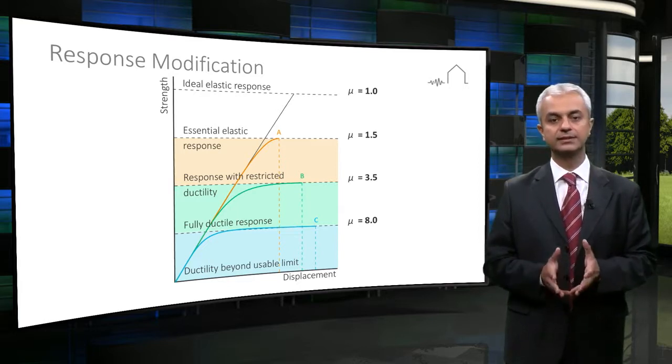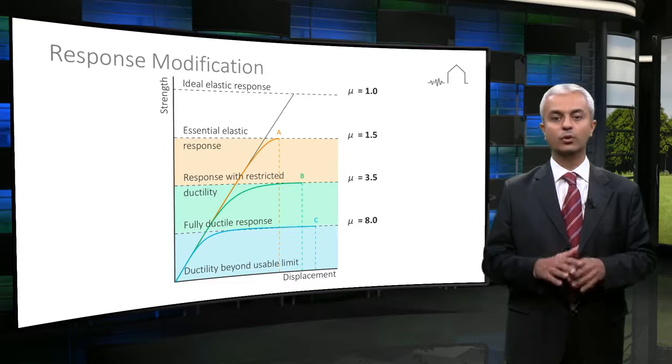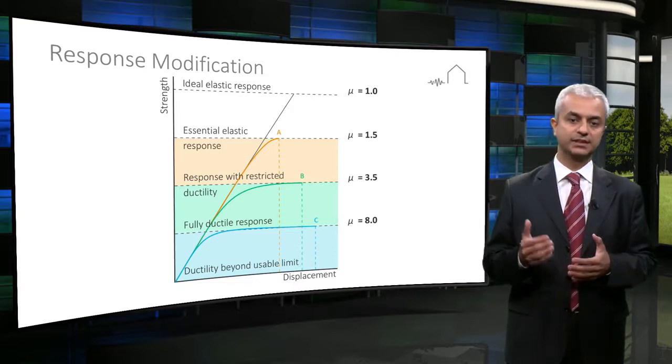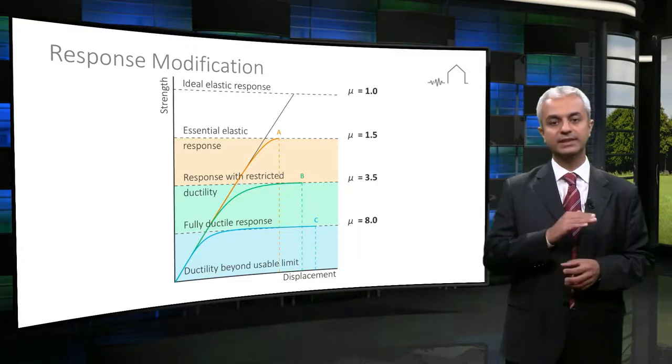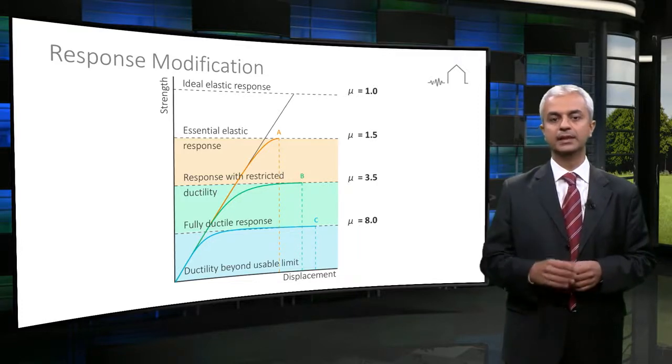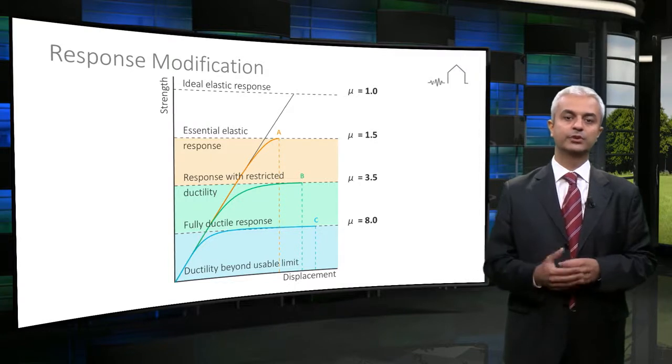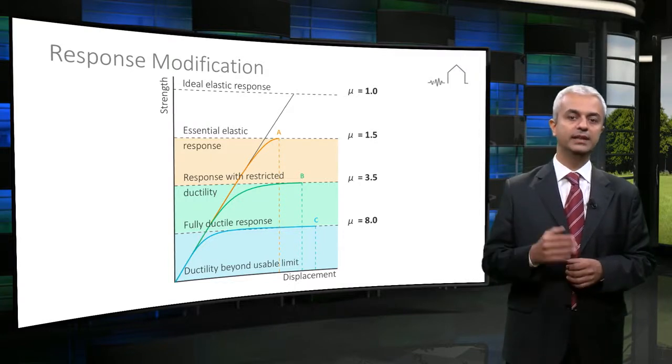This factor represents ductility, overstrength, overall system properties such as redundancy and damping, and is used to reduce elastic forces to design force level. This factor is a tool to incorporate inelastic behavior in linear analysis.